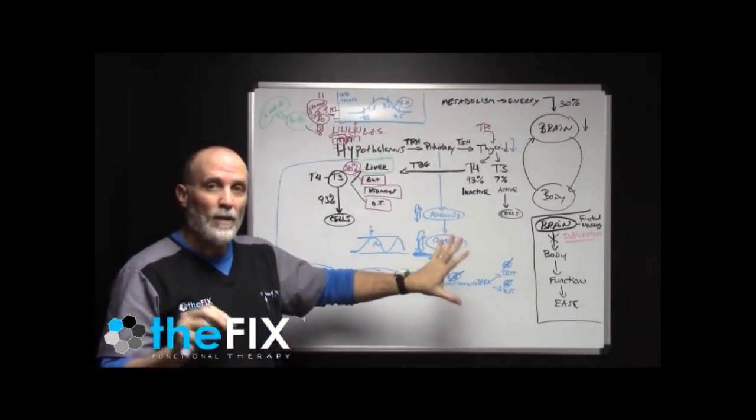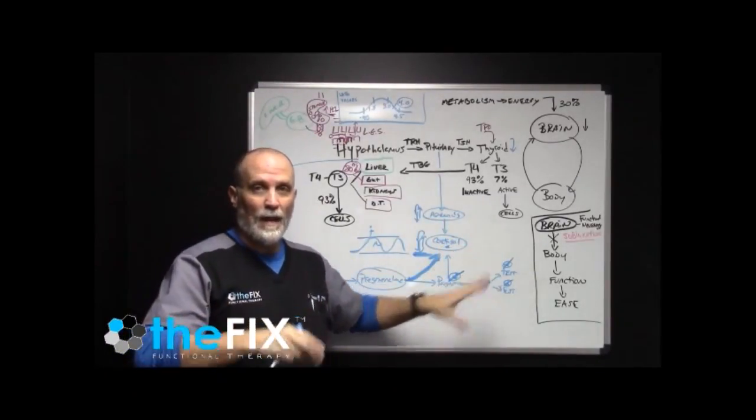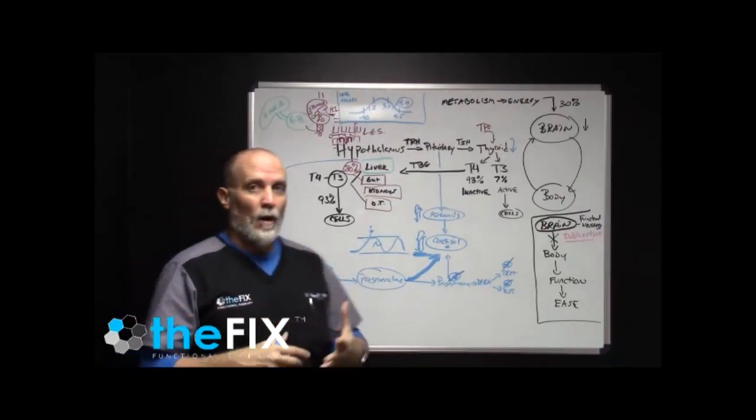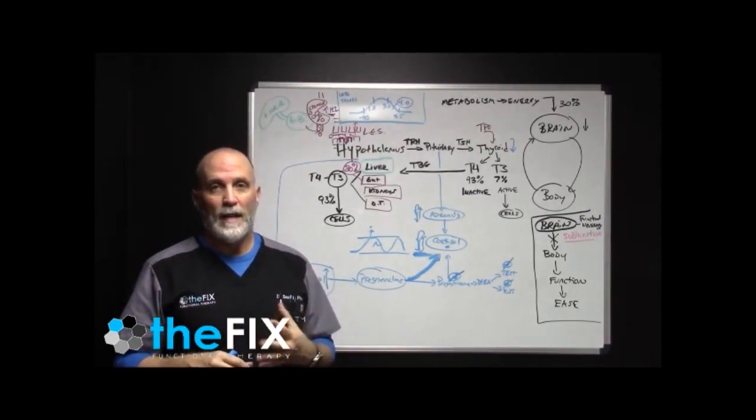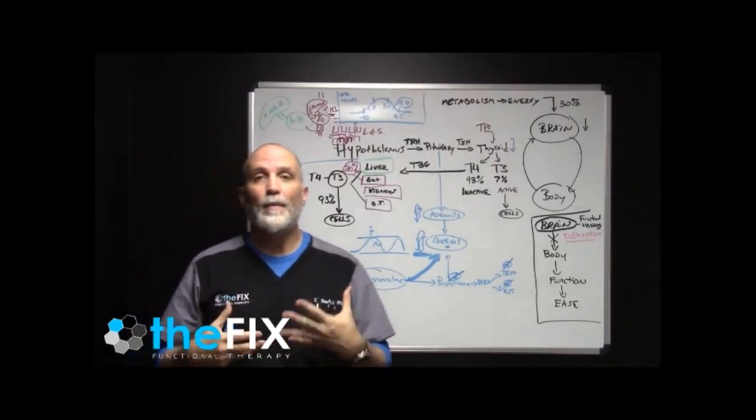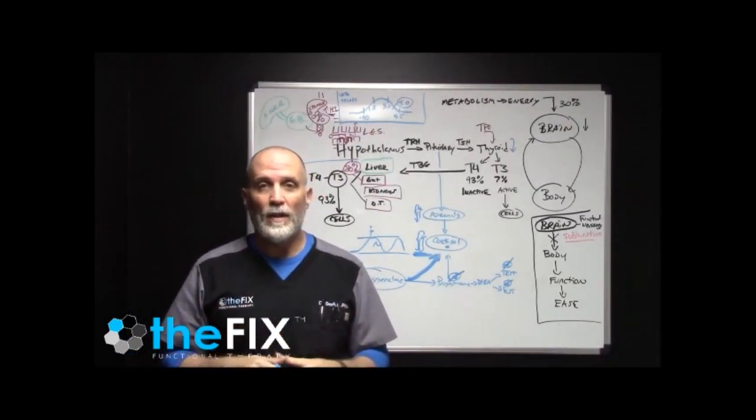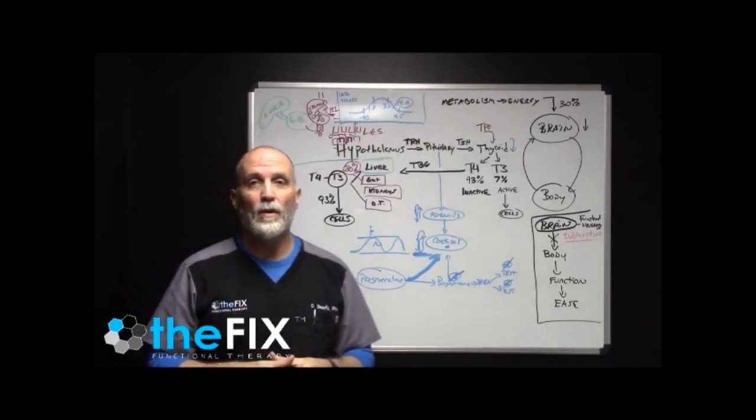But you do have hormone imbalances. Now, here's what's key in how this relates to the thyroid gland. There are a lot of what we call estrogen precursors in our environment. So for example, if you use a lot of plastics in your food, those are estrogen precursors. If you eat a lot of soy, that's an estrogen precursor.